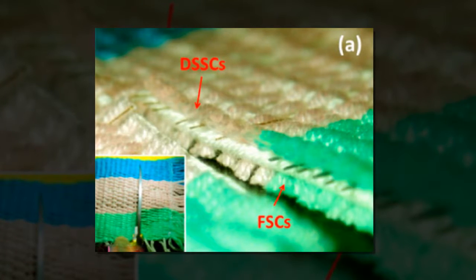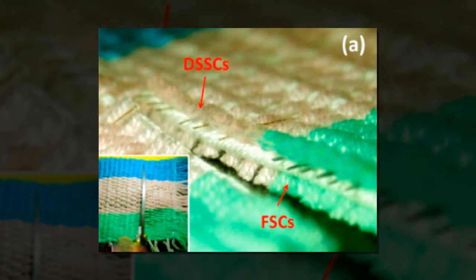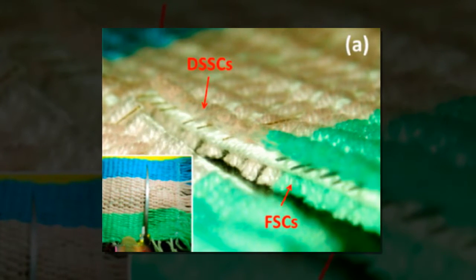The second type of fiber was made of titanium, titanium-nitride, a thin carbon shell to prevent oxidation and an electrolyte. These fibers were then woven with cotton yarn.